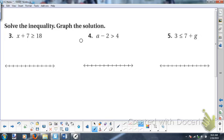So number four, I have a minus 2 is greater than 4. So how do I get the a by itself? Just like the equation, I do the opposite operation in the opposite order. There's only one thing here, so that's all we have to do is get rid of the 2. So subtracting 2, I'm going to add 2. I'm going to add 2 to both sides.